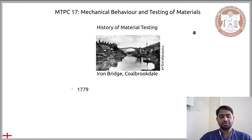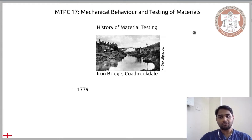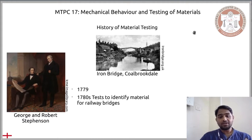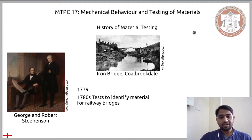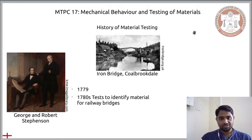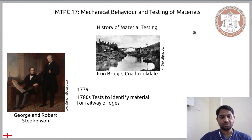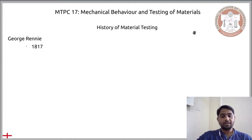Around the same period, we have the works of George and Robert Stephenson. George Stephenson, the father of railways, wanted to choose the right material for building railway bridges. It is reported that he involved several professors to do testing on cast and wrought iron. Based on the testing of materials, it was found that cast iron would be more appropriate for building railway bridges.